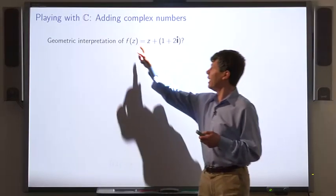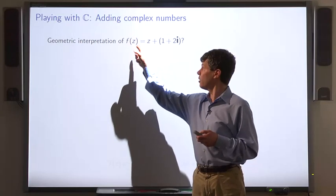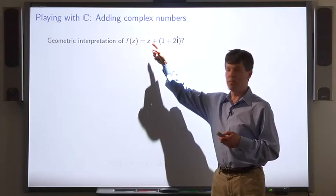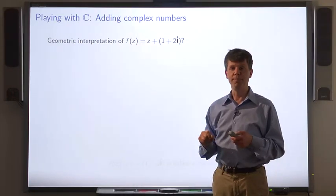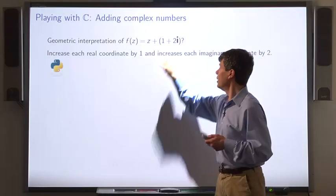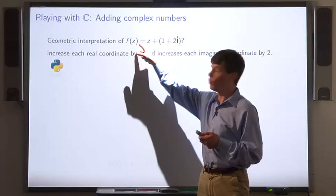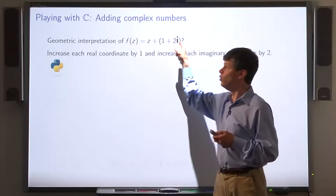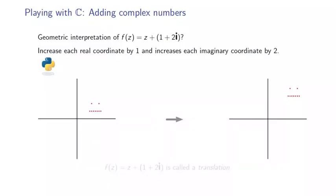Now here's a function. It maps the input complex number to that number plus 1 plus 2i. How do we interpret that geometrically? The effect of this function is to add 1 to the real part of z and 2 to the imaginary part of z. We can think of that as operating on a point and getting another point that's 1 unit to the right and 2 units up.